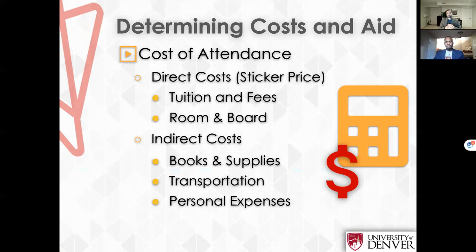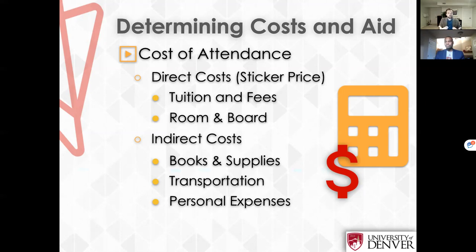Determining costs and aid: the cost of attendance includes direct costs — tuition and fees, things that will be billed to your account, and room and board depending on your situation. Indirect costs are estimates based on averages: books and supplies, transportation, and personal expenses. We want to give you an idea of the full price, not just what we'll bill you, so you understand what attending DU will ultimately cost. The full cost of attendance is direct costs — the sticker price — plus indirect costs combined.